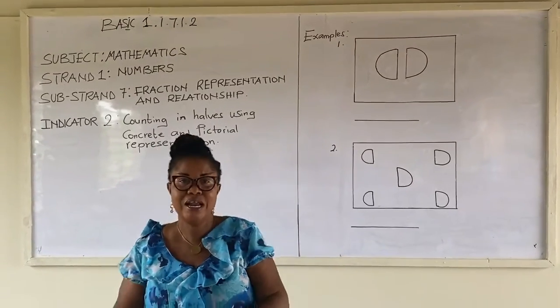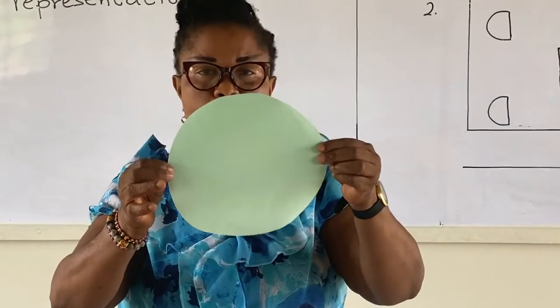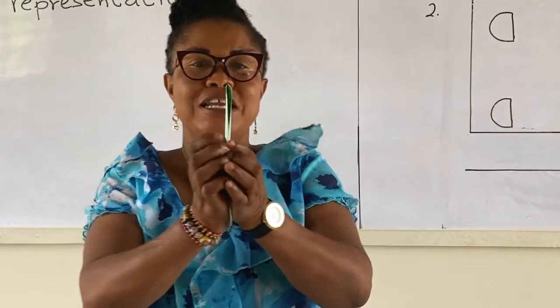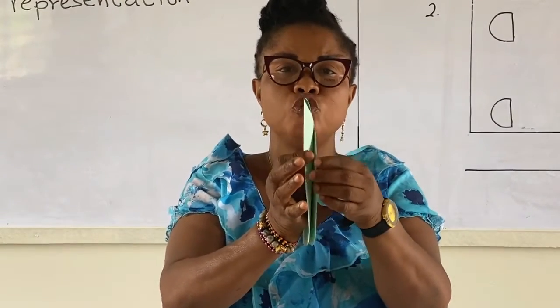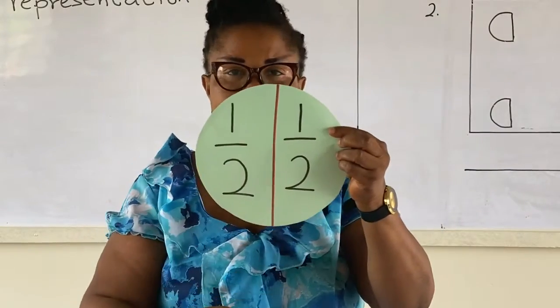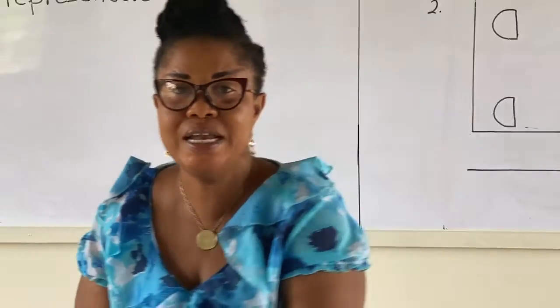Now, let's look at this. This is one whole, one whole. And when one whole is equally divided into two, we have a half and a half.